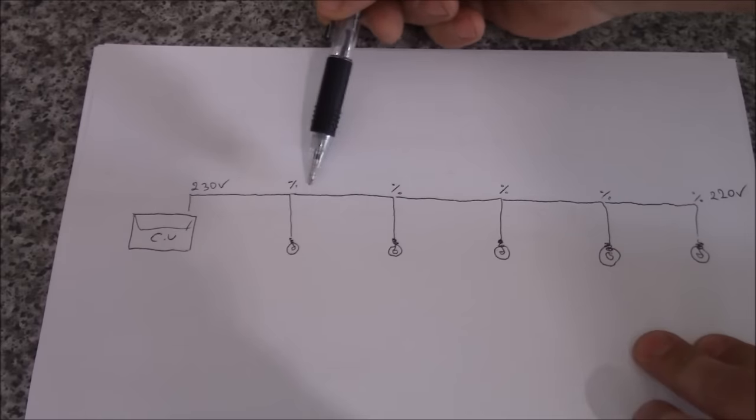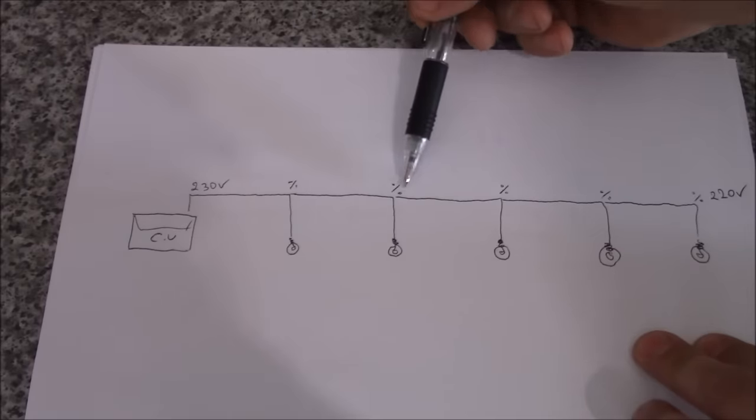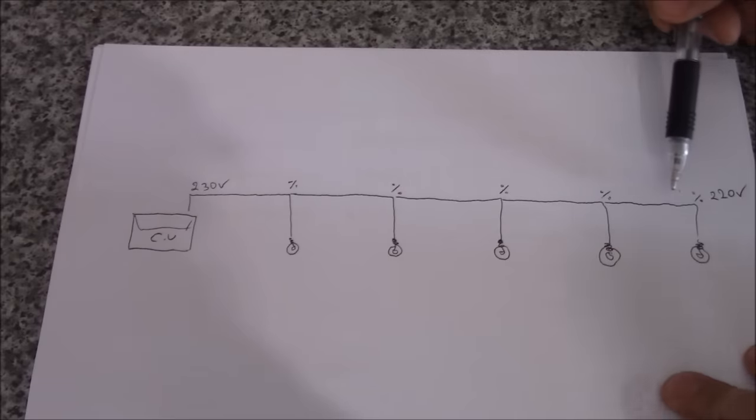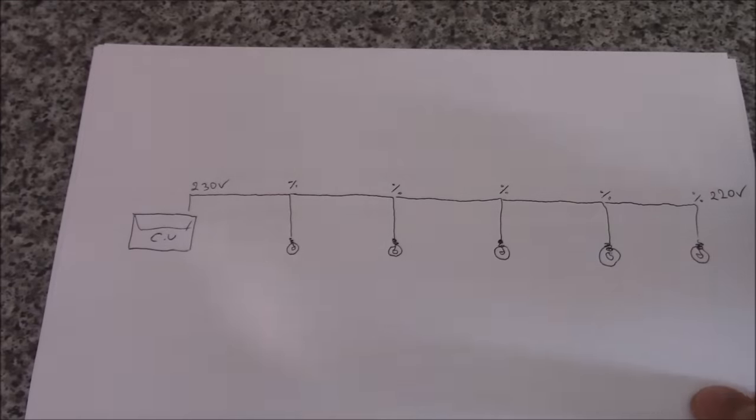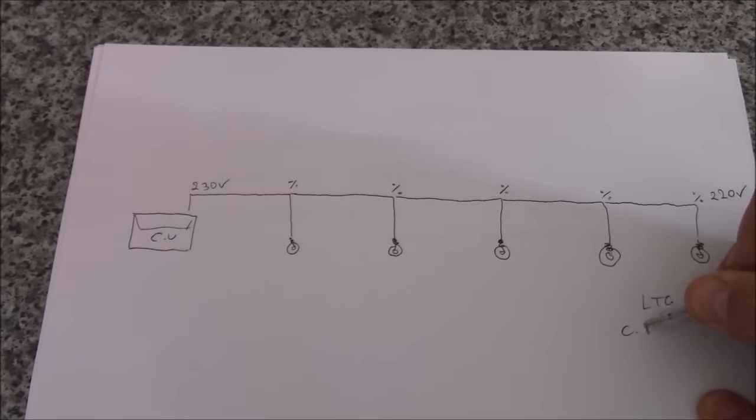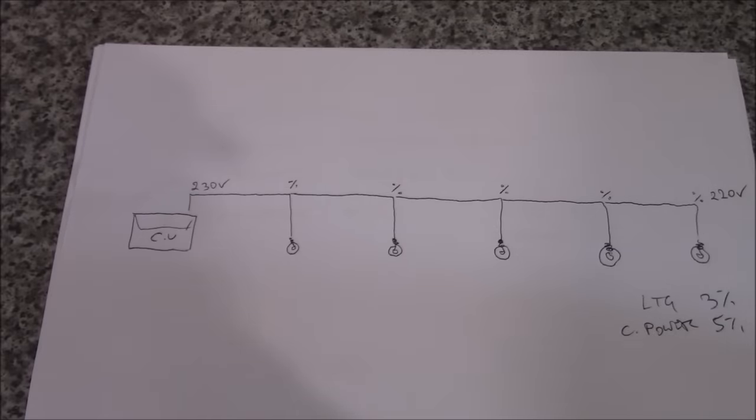At the beginning we've got 230 volts. So there's voltage loss in every let's say meter of the cable. So at the end it might appear that we've got the voltage only 220 volts. So in UK the allowable voltage drop for lighting circuits is 3% and for the general power is 5%.